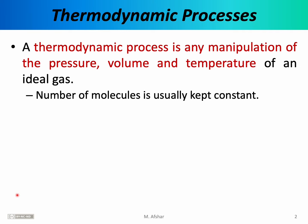In general, a thermodynamic process refers to any manipulation of any thermodynamic parameters describing a system. However, in this class, we'll adopt a much more limited definition. For us, in this class, a thermodynamic process is any manipulation of the pressure, volume, and temperature of an ideal gas. So for us, a thermodynamic process is a manipulation of three specific parameters — pressure, volume, and temperature — and the systems that we'll consider will be, in most cases, ideal gases.